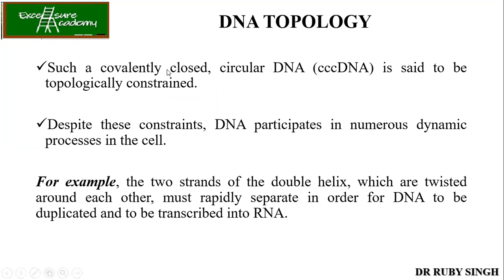Despite these constraints, DNA participates in numerous dynamic processes in the cell. The DNA needs to open up so that it can carry out replication and transcription. The two strands of the double helix which are twisted around each other must rapidly separate in order for DNA to be duplicated and to be transcribed into RNA. It is not the entire DNA that opens up — only a small bubble is formed, called a replication bubble or transcription bubble. From there it starts.